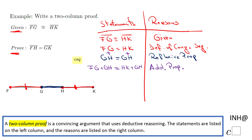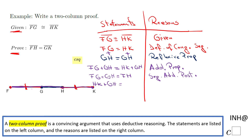FG plus GH is nothing else than FH — that segment. The reason I used here is the segment addition postulate, or the ruler postulate. Similarly, on the right side, HK plus GH gives us segment GK. The reason is the same: segment addition postulate.